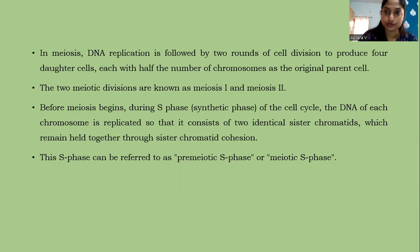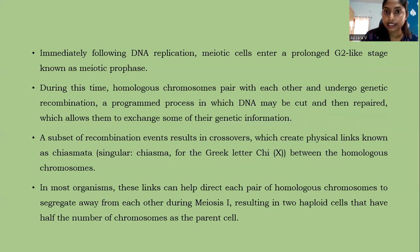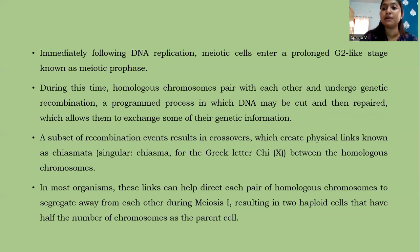In meiosis, DNA replication is followed by two rounds of cell division to produce four daughter cells, each with half the number of chromosomes as the parent cell. The two meiotic divisions are known as meiosis one and meiosis two. Before meiosis begins, during the S phase of the cell cycle, the DNA of each chromosome is replicated so that it contains two identical sister chromatids held together through sister chromatid cohesion. This is referred to as the pre-meiotic or meiotic S phase. Following DNA replication, meiotic cells enter a prolonged gap-two-like stage known as meiotic prophase, during which homologous chromosomes pair, undergo genetic recombination, and DNA may be cut and repaired to exchange genetic information.